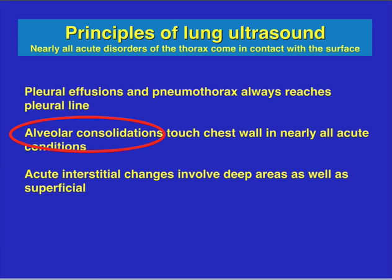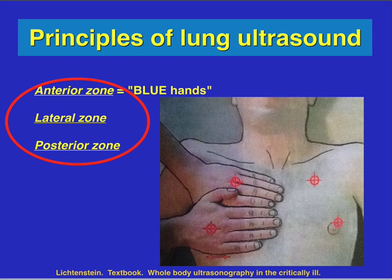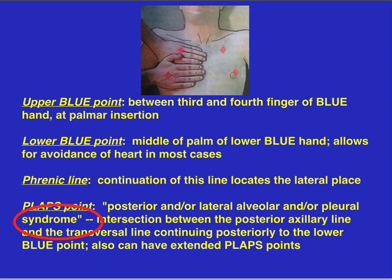Remember, most alveolar consolidations touch the chest wall in nearly all acute conditions. The problem with pneumonia is it could be in quite a large number of locations, so it may be difficult to find the exact spot, although most of the time when we're doing these exams we're looking in the lateral and posterior regions. There are anterior, lateral, and posterior zone lung exams. The PLAPS point — the posterior and/or lateral alveolar pleural syndrome point — is at the intersection of the posterior axillary line. I actually look for pneumonias in the mid-axillary line as well as the posterior.